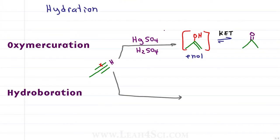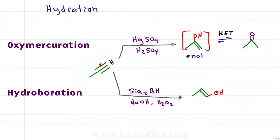For hydroboration I can use some version of boron — here I have dicyclohexylborane — to once again break just one pi bond and get an OH group added to the less substituted or anti-Markovnikov position. This again gives an unstable enol that will tautomerize through keto-enol tautomerization, this time giving a terminal carbonyl or an aldehyde.